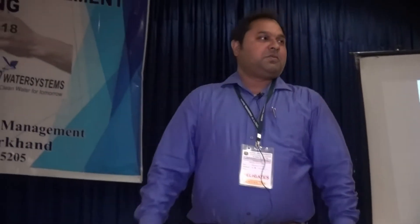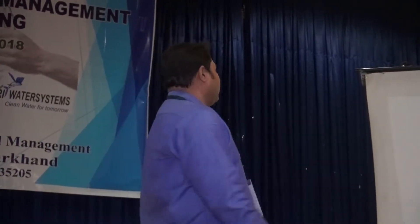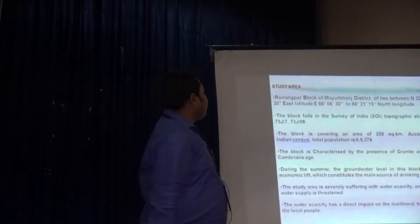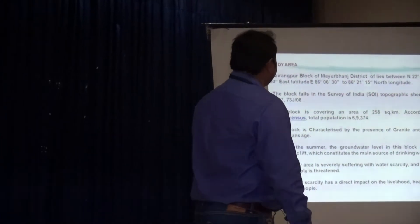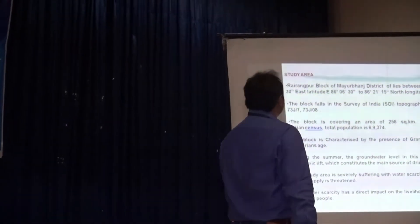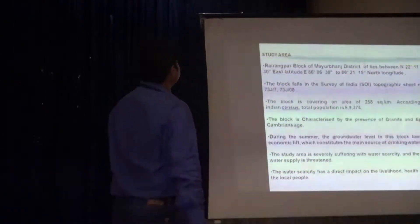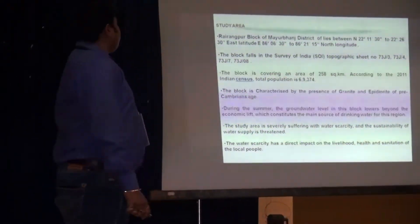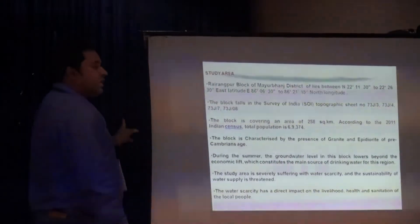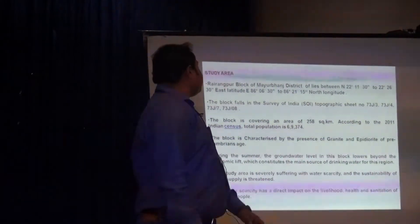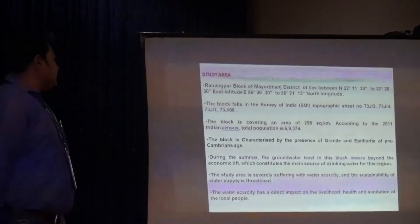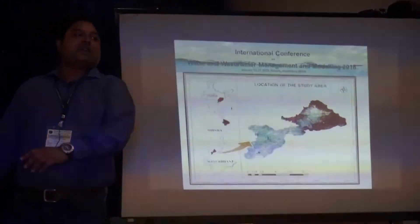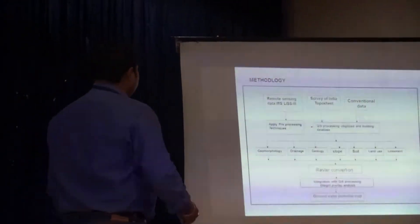This is the introduction and study area. The latitude is 22 degrees 11 minutes 30 seconds to 22 degrees 26 minutes 30 seconds east, and 86 degrees 32 minutes to 21 degrees 15 minutes north longitude. This is the geographical location. The topographic sheets are 73 J3, J4, J7, and J8. This is the location shown on the DEM model.